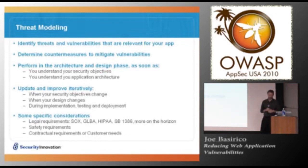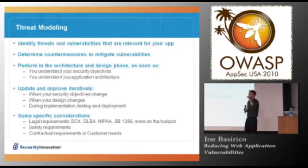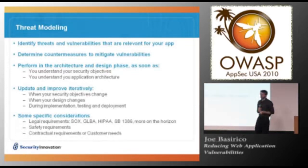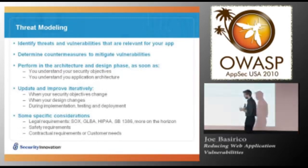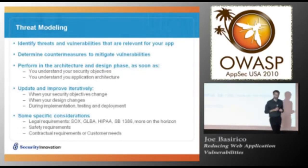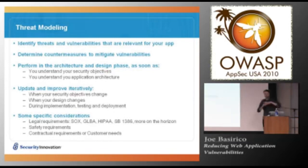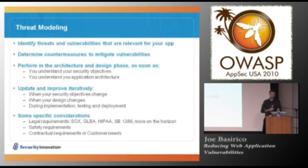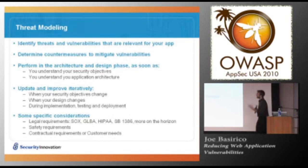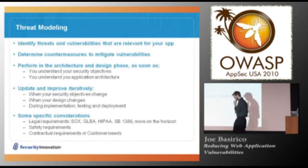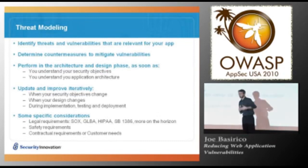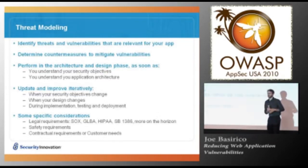Then we think about determining countermeasures — how can we mitigate those vulnerabilities? For example, a threat might be an attacker stealing user credentials; we can mitigate that by adding SSL or fixing SQL injection vulnerabilities. The next step is to do an architecture and design review process so we can understand our security objectives, understand our application architecture, and react to the system accordingly. Once we've created our threat model, we update and improve it. Too many teams create their threat model and then tick the box and put it on the shelf.